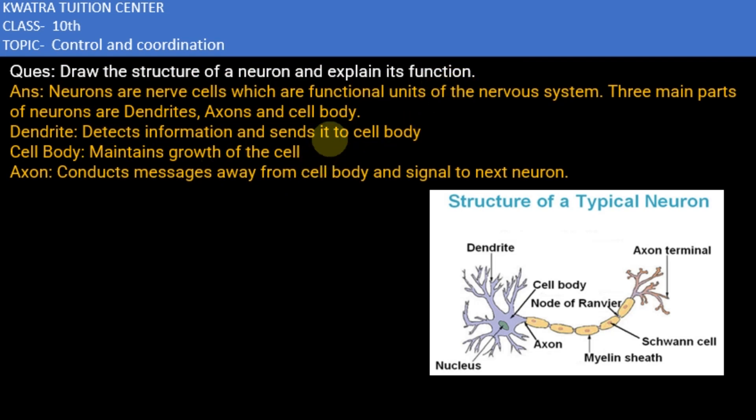So here we draw a structure of neuron and its parts. This is a structure of neuron and it has different parts. This is the cell body, and it is also known as cyton.